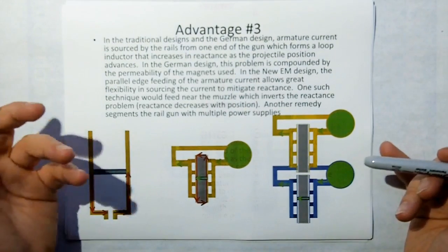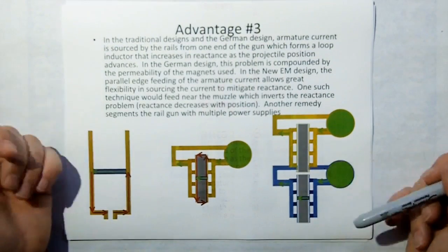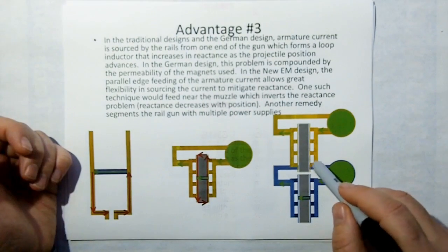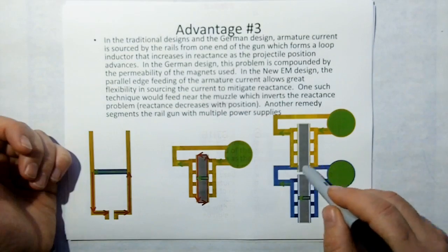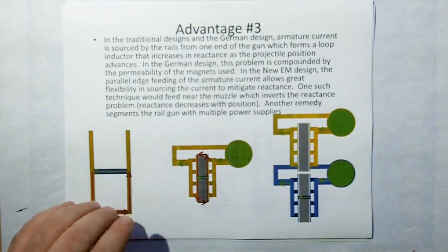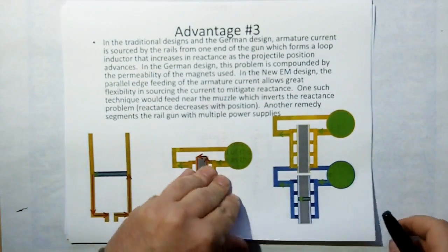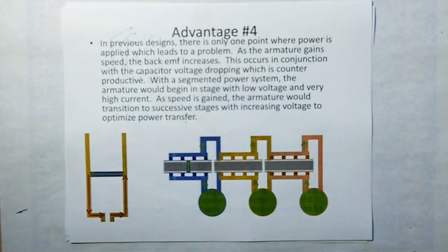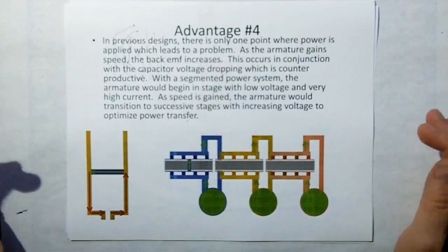And then we could also reduce the reactance by feeding the rails at multiple locations. Now don't be confused. This blue isn't connected to the orange or the yellow. It goes behind it. I just didn't, too lazy to draw it in such a way that shows that. So the blue is not connected to the orange.